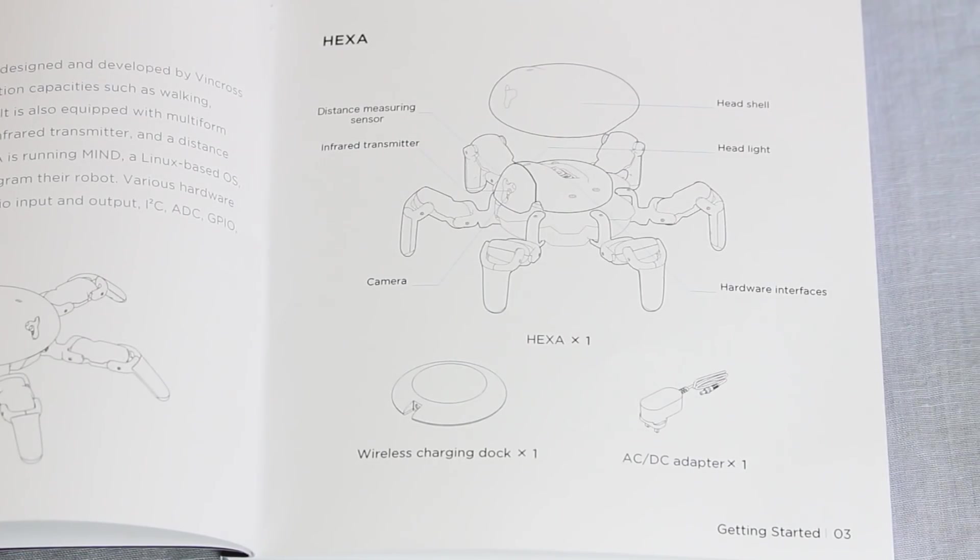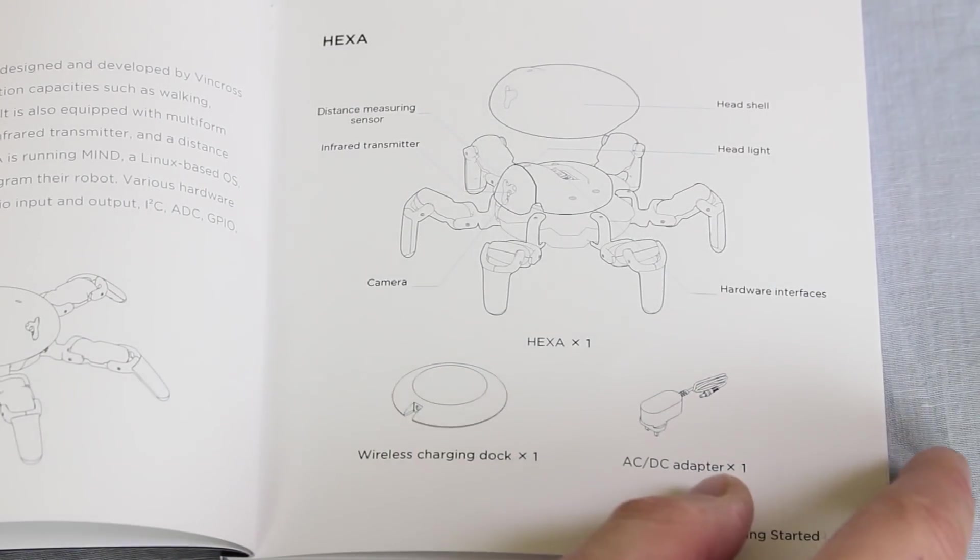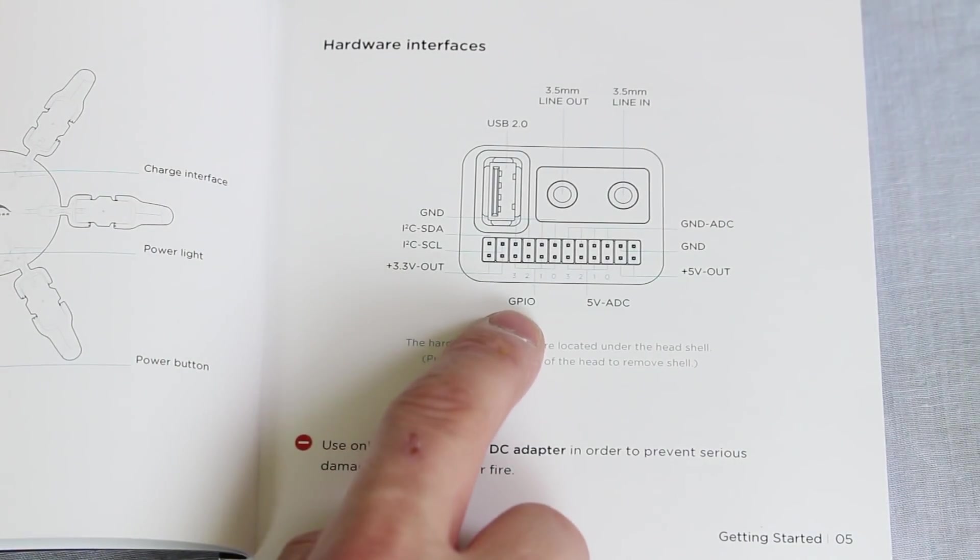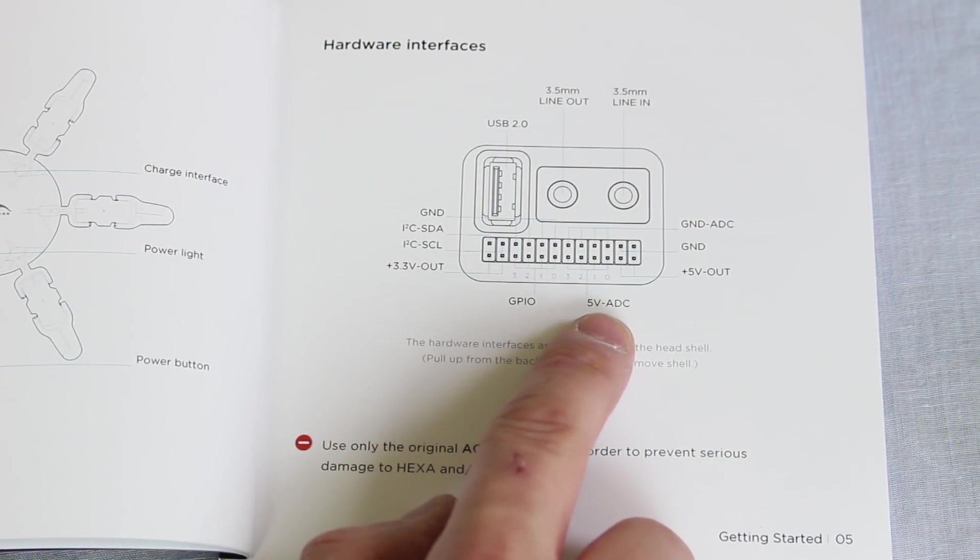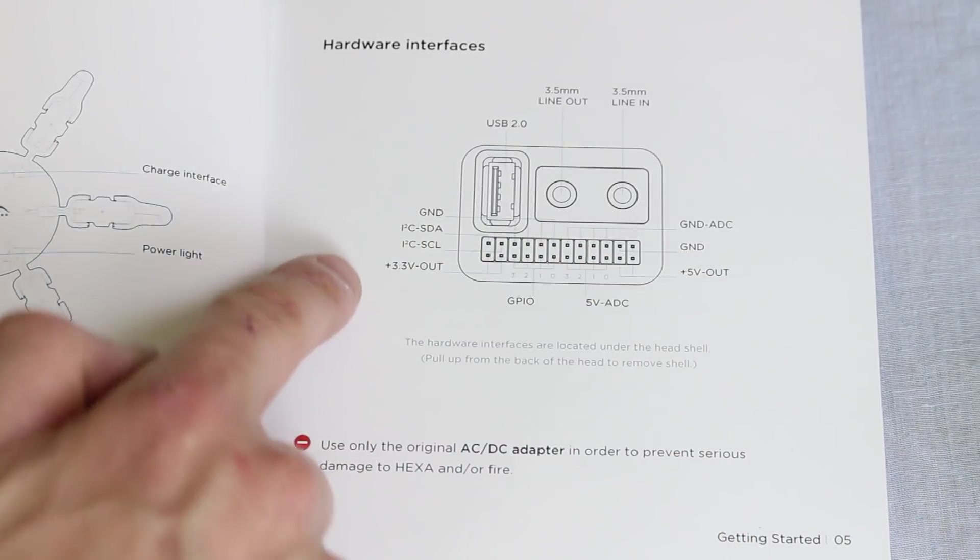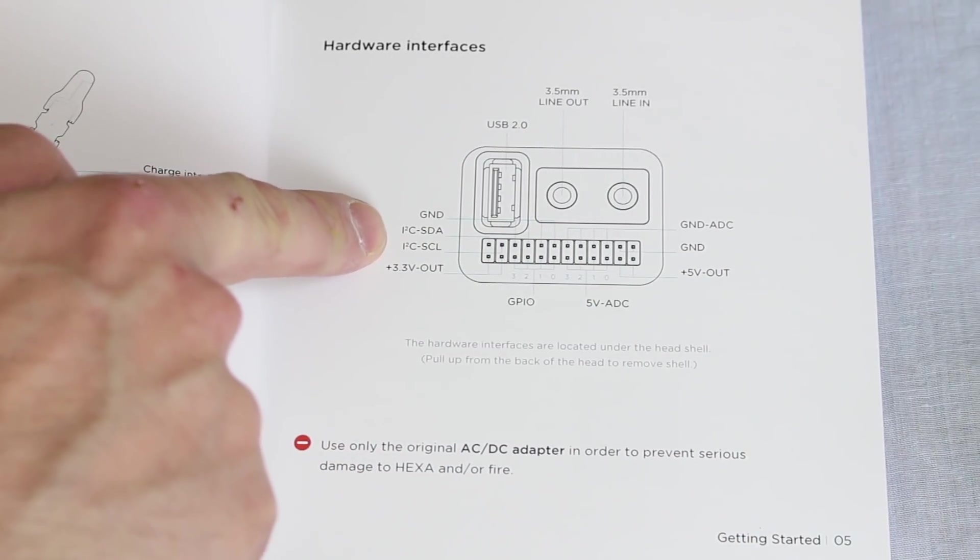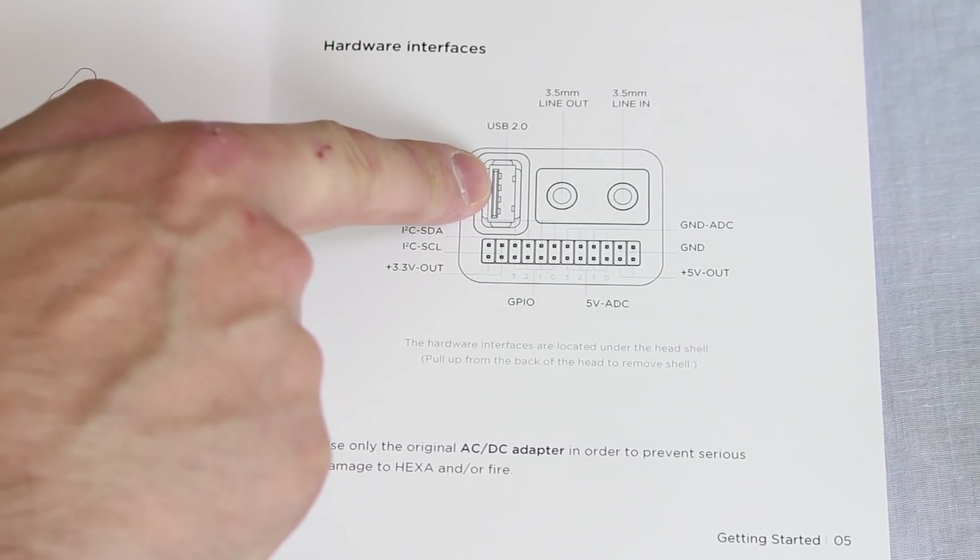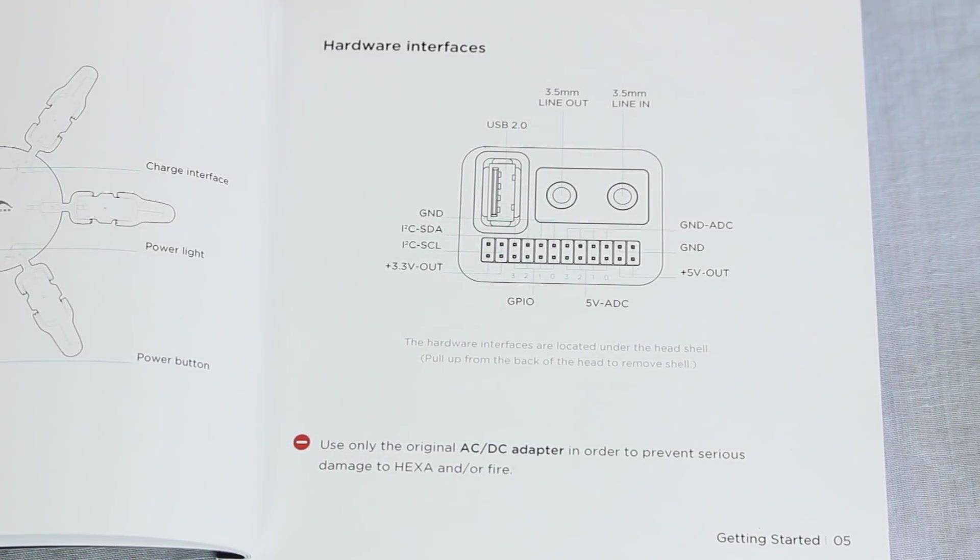Here's a couple of pages from the manual, which seems pretty in-depth. There's a pretty thick manual. On this page here, we've got what all of those pins are. So we've got some GPIO, five volt with ADC, five volt and ground pins. We've got SCL and SDA, which are I squared C pins. 3.3 volts, another ground pin. USB 2, and these jacks appear to be for audio in and out.